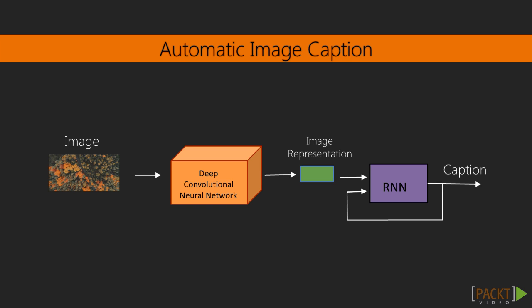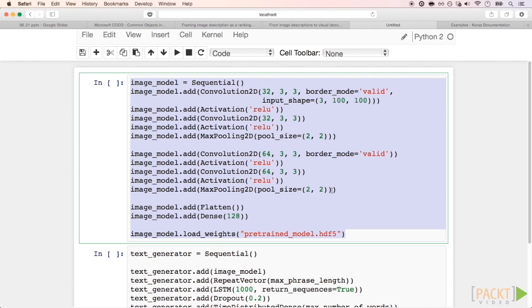This approach was proposed by research groups at Google and Stanford. From our input image, the convolutional neural network extracts features from the images, similarly to what we did in the cat versus dog example. But instead of training a classifier on top of these features, we train a recurrent neural network to generate text word by word. The error signal is the difference between the generated and the expected text. If you want to try to learn this full model from scratch, a Keras model to do that would look like the following.